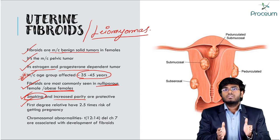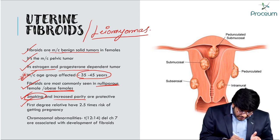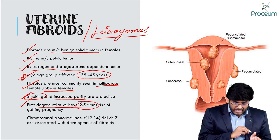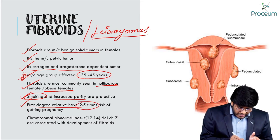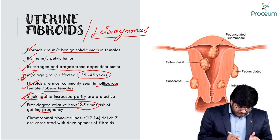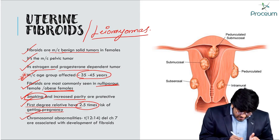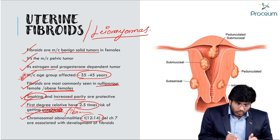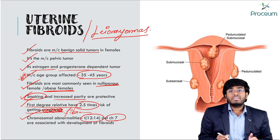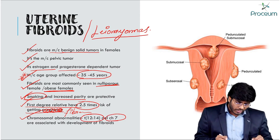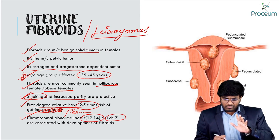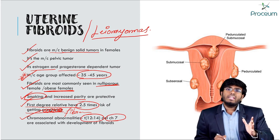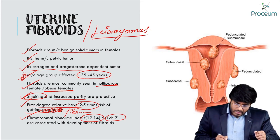First-degree relatives — mother-daughter or sister-sister — have a 2.5 times risk of developing uterine fibroids. Chromosomal abnormalities such as translocation 12;14 and deletion of chromosome 7 are associated with the development of uterine fibroids.